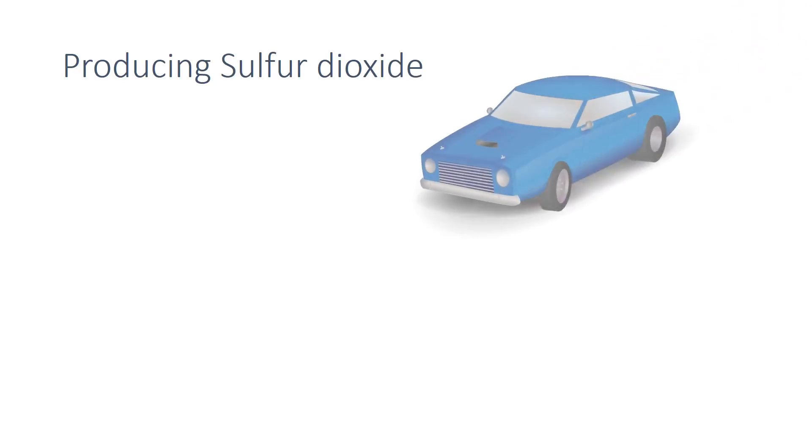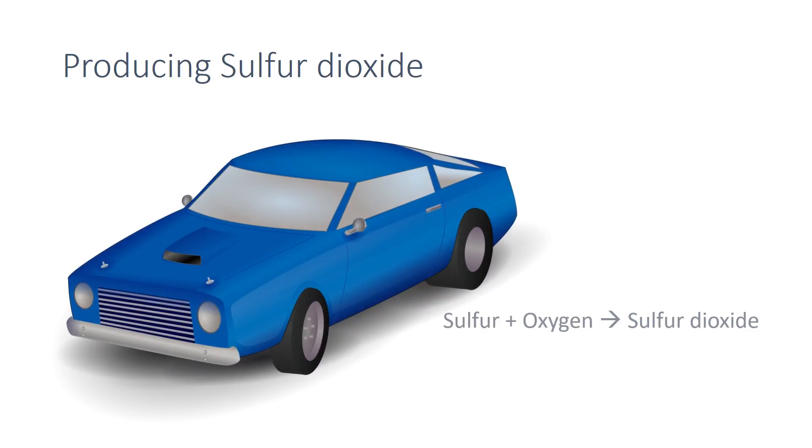All fuels contain at least some sulfur. When the fuels are burnt, the sulfur reacts with oxygen to form sulfur dioxide, which goes on to contribute towards acid rain.